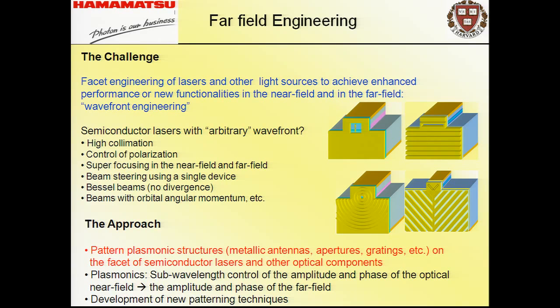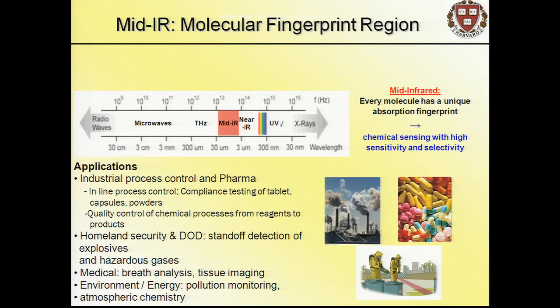The trick is to pattern plasmonic structures—metallic antennas, apertures—on the facet of semiconductor lasers and other optical components. Through local control of amplitude and phase, you engineer the near field and wave front. We've developed quantum cascade lasers for many years as a platform to demonstrate these concepts, though they're not limited to this wavelength range.